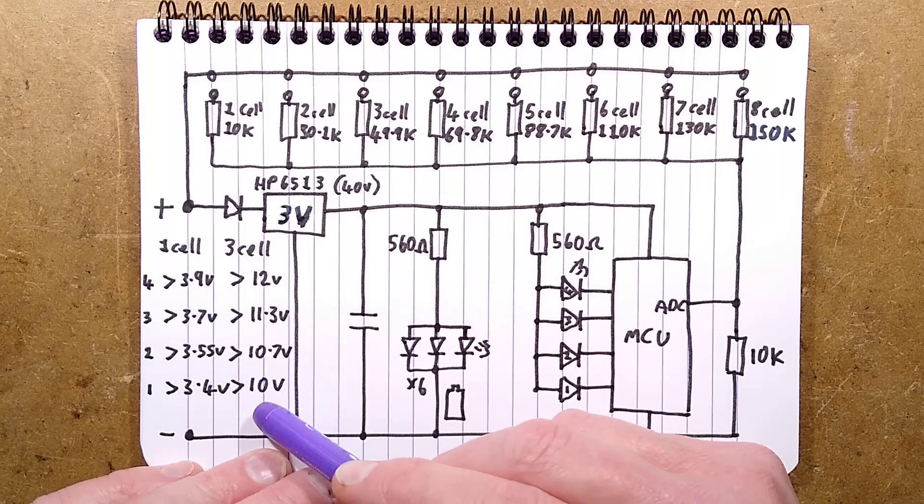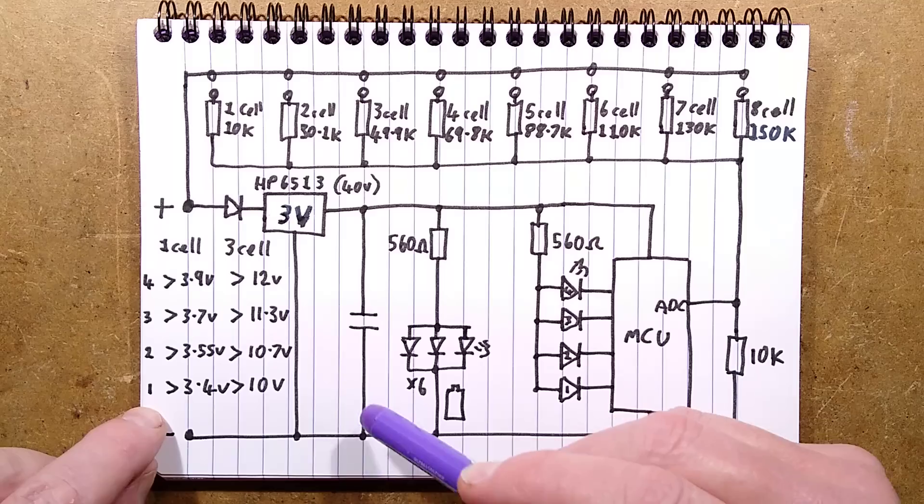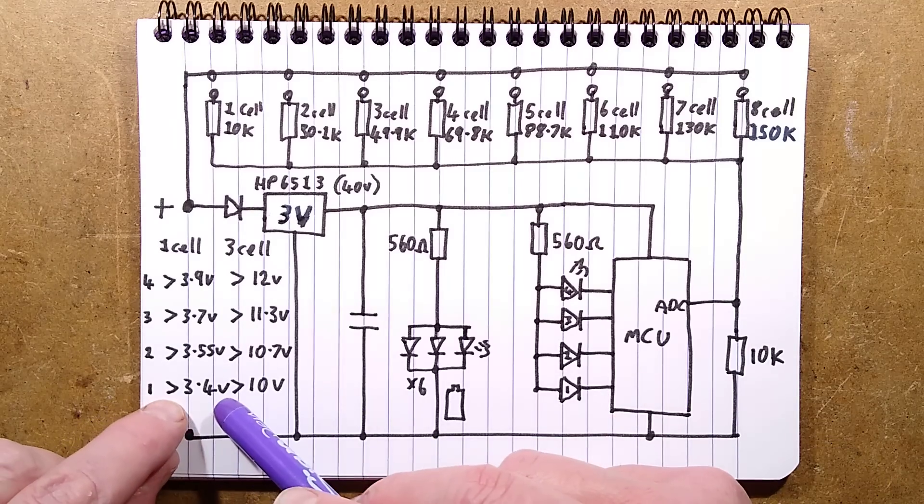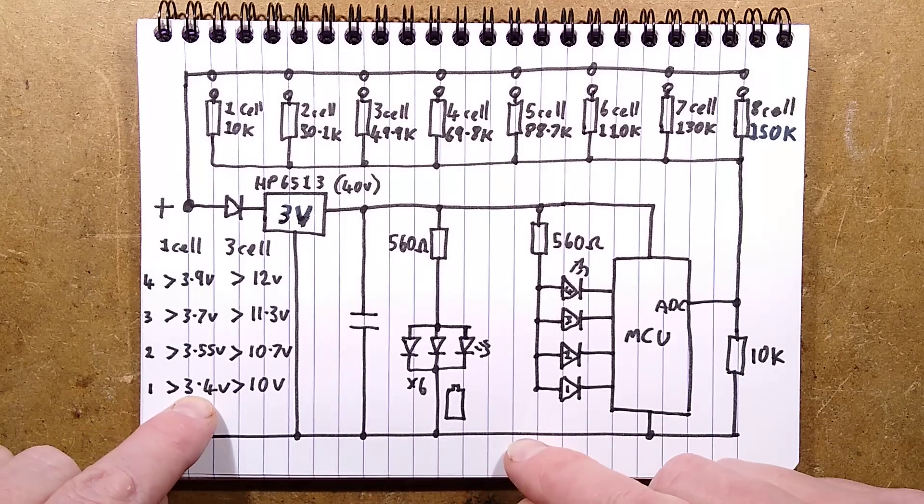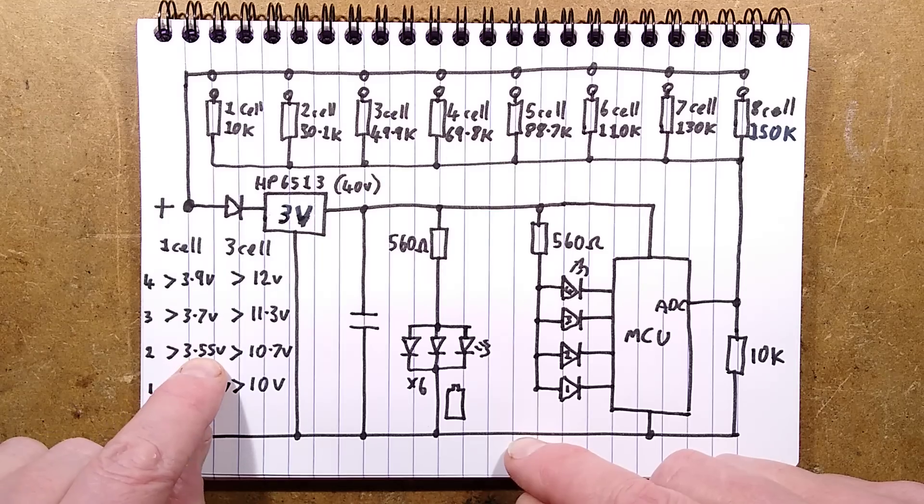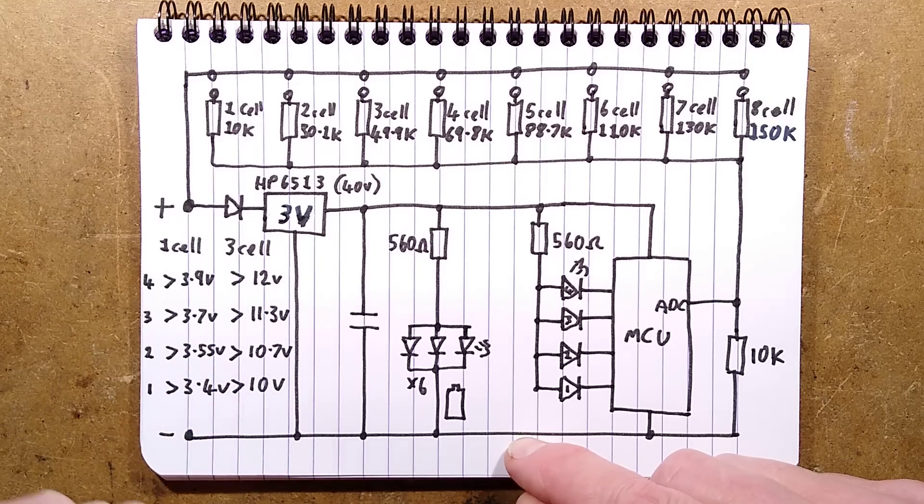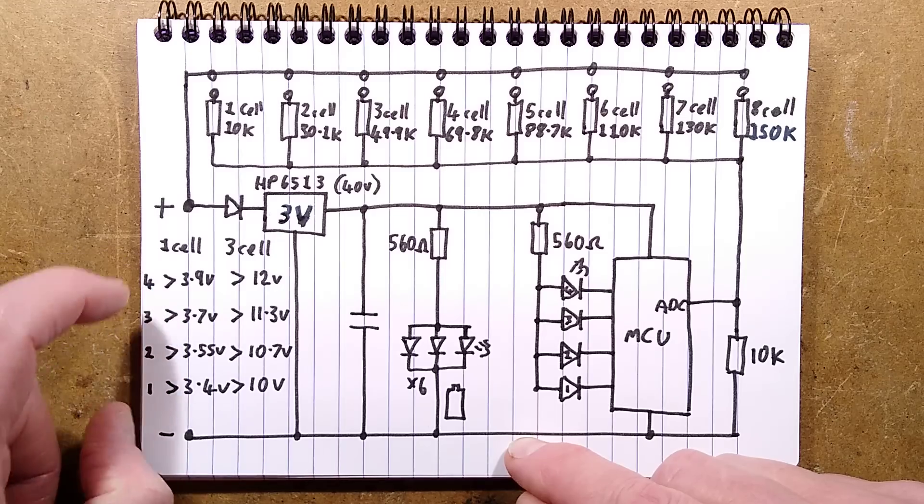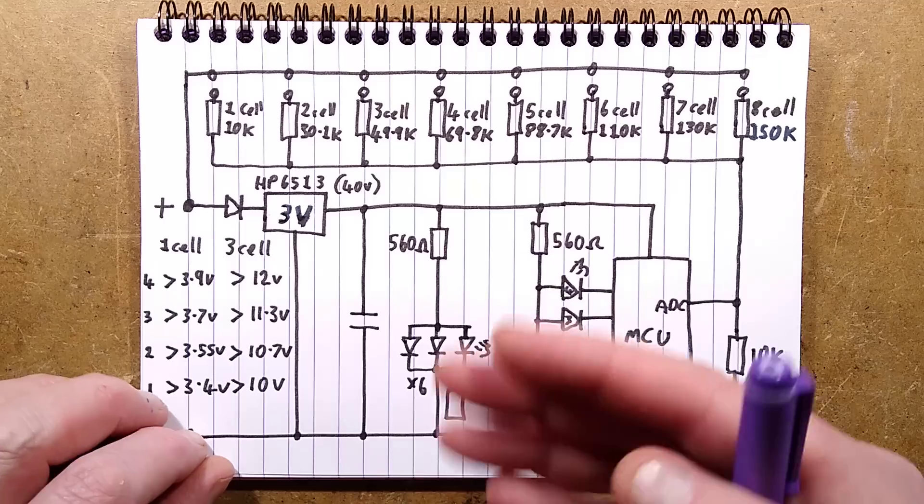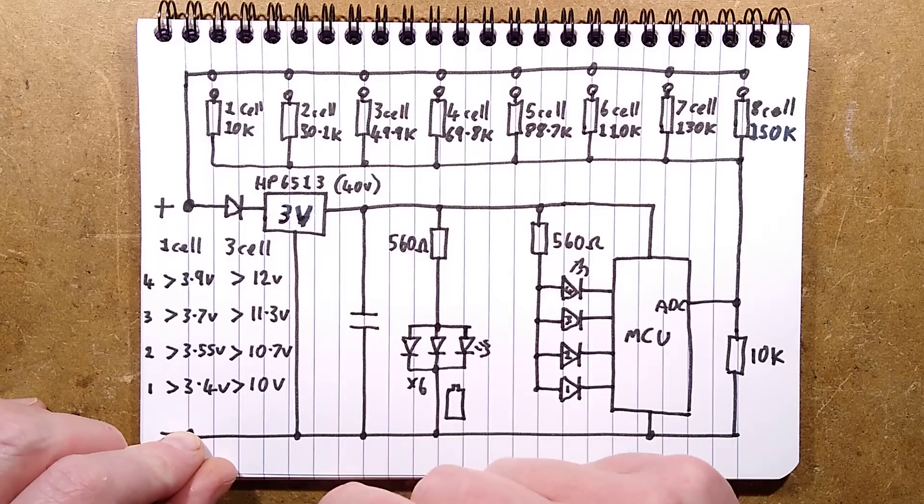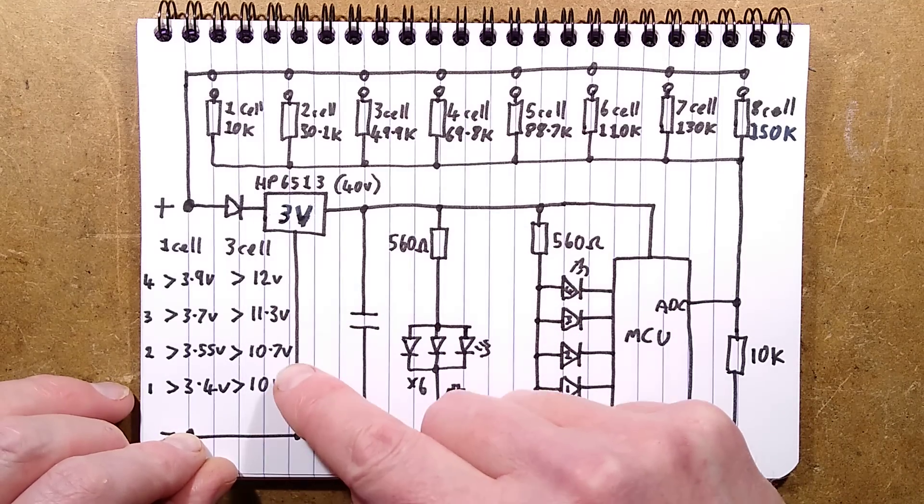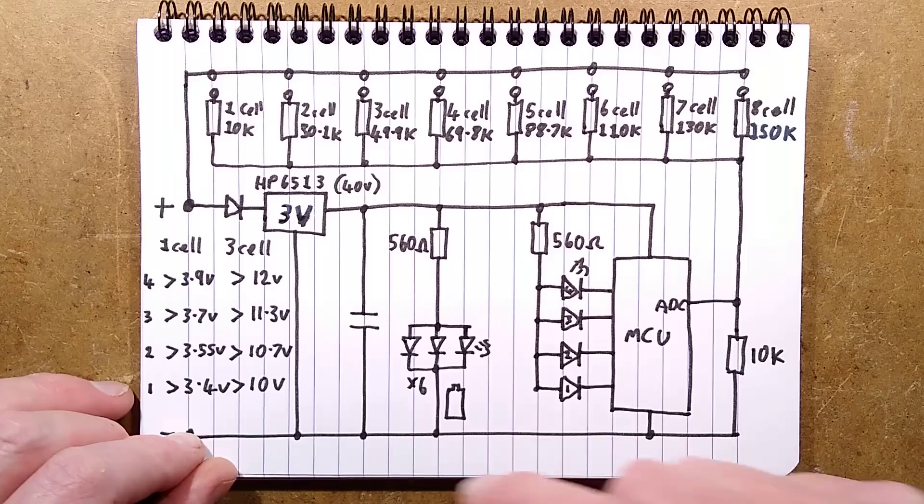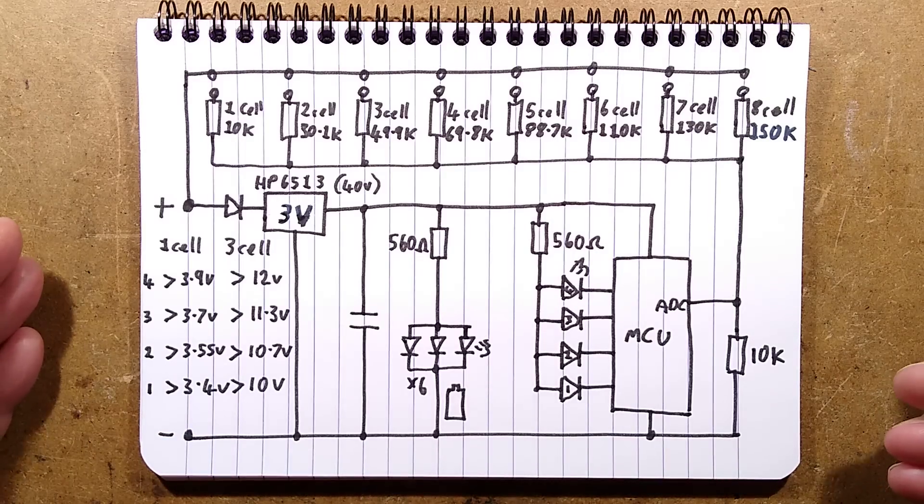But for reference the voltage thresholds it operates at: the single step with a single cell was above 3.4 volts, the second step above 3.55, the next step above 3.7, and the full charge, the four bars, was above 3.9. And that equates roughly to what I was getting the three cell which is three times that roughly: 10 volts, 10.7, 11.3, and 12 volts. It's quite a useful thing though.